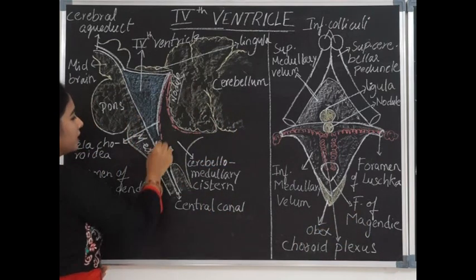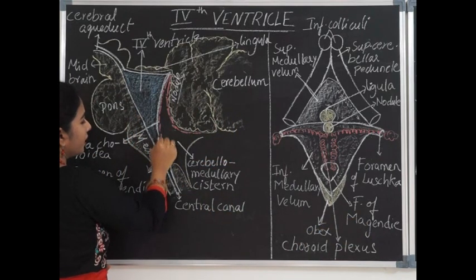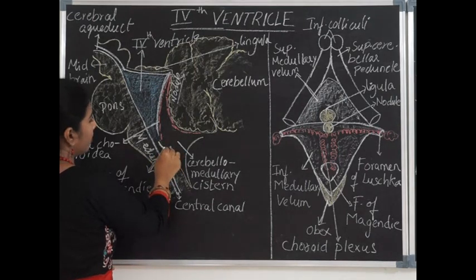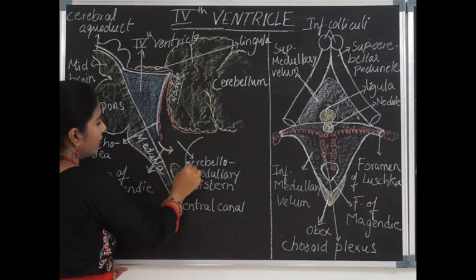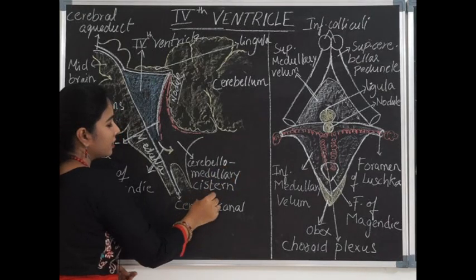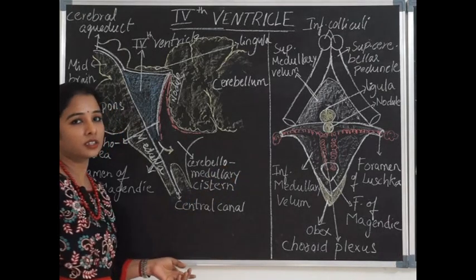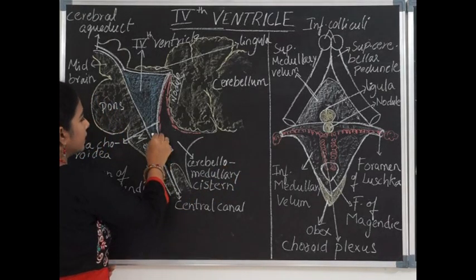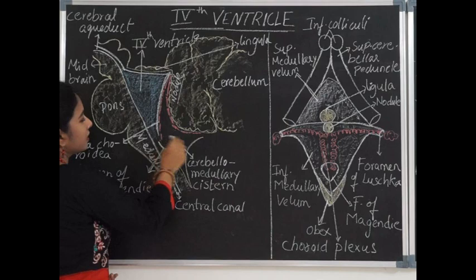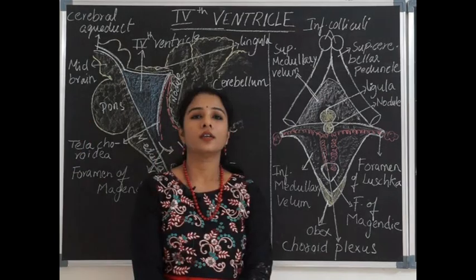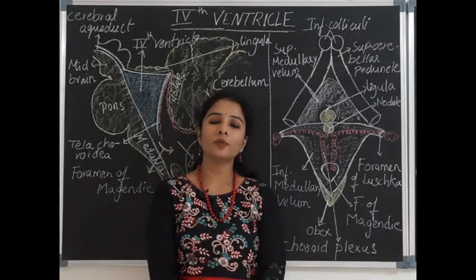These vertical fringes are interrupted by the foramen of Magendie, which is a communication along the inferior medullary velum dorsally. It communicates with a large space called the cerebellomedullary cistern or cisterna magna, where the ventricular system communicates with the subarachnoid space.